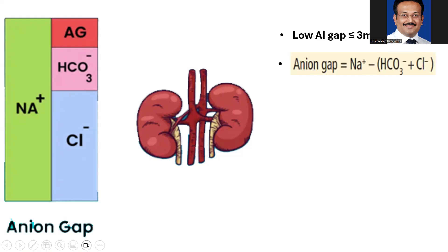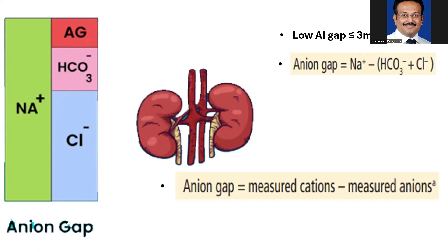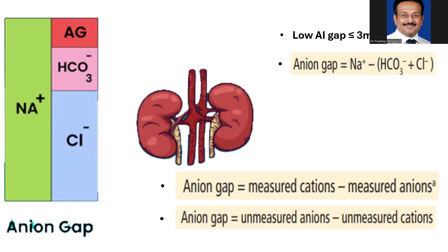The anion gap can be defined as sodium minus bicarbonate plus chloride, or as measured cations minus measured anions — which is the same as sodium minus chloride plus bicarbonate. There is another important definition: anion gap is also equal to unmeasured anions minus unmeasured cations. Understanding this is key to understanding the causes of low anion gap, since these are not captured in the standard formula.